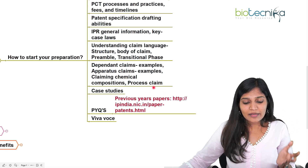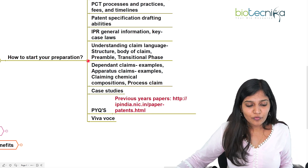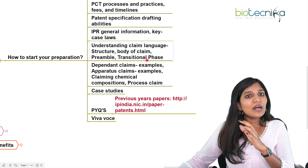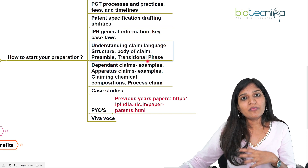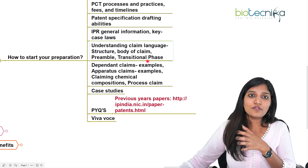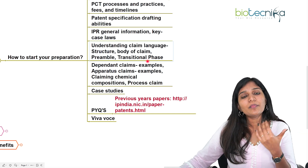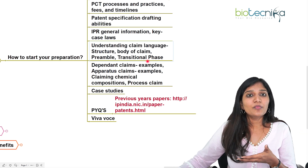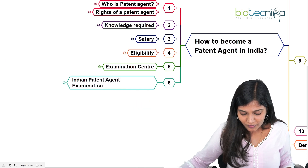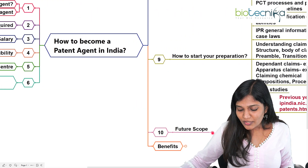For the Viva Voce, most questions come from your sections — laws, drafts, fees — and your personal details. It's essentially a normal personal interview. If you qualify with 50% minimum in Paper 1, 50% minimum in Paper 2, and around 50% in the Viva Voce, with an aggregate of 60% or more, you will become a patent agent.